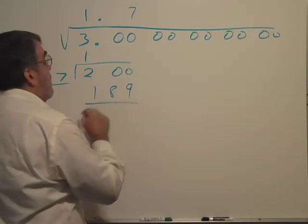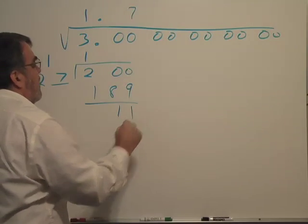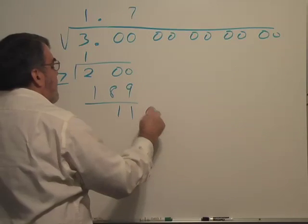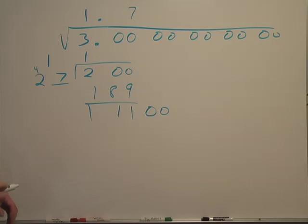We're going to subtract again like long division. We subtract, we'll get 11, and now I'm going to bring down these two zeros. At this point we're going to again double the last digit, so I'm going to double the 7 and that gives me 14.